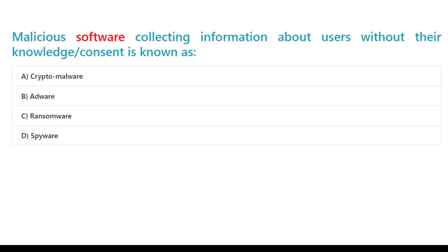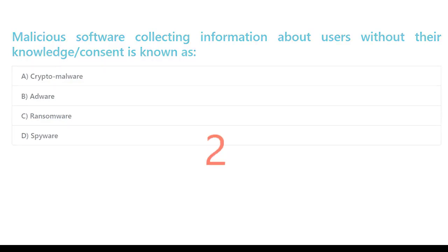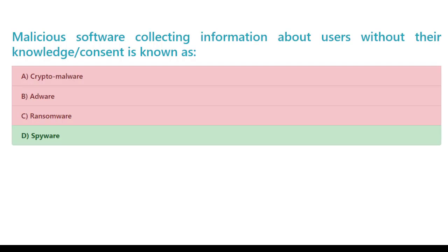Malicious software collecting information about users without their knowledge or consent is known as: A. Crypto malware. B. Adware. C. Ransomware. D. Spyware. The correct answer is D. Spyware.